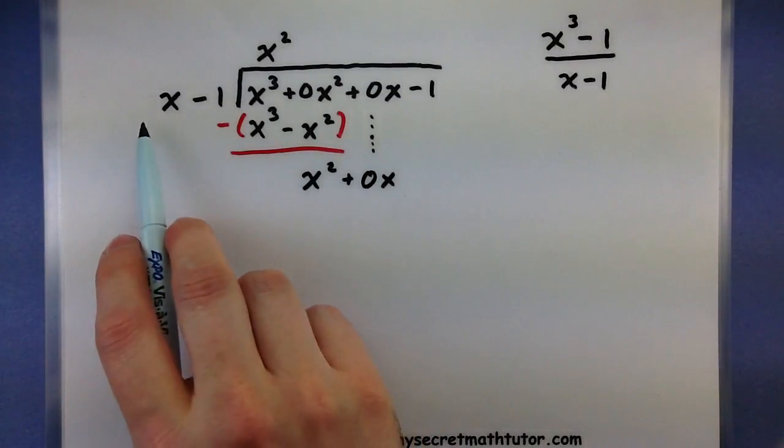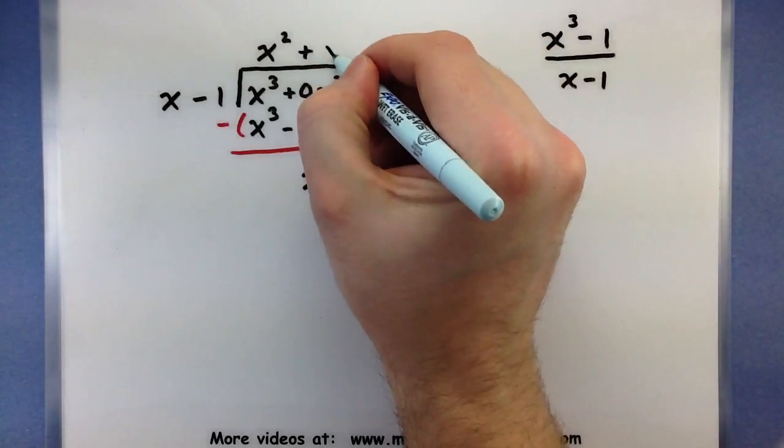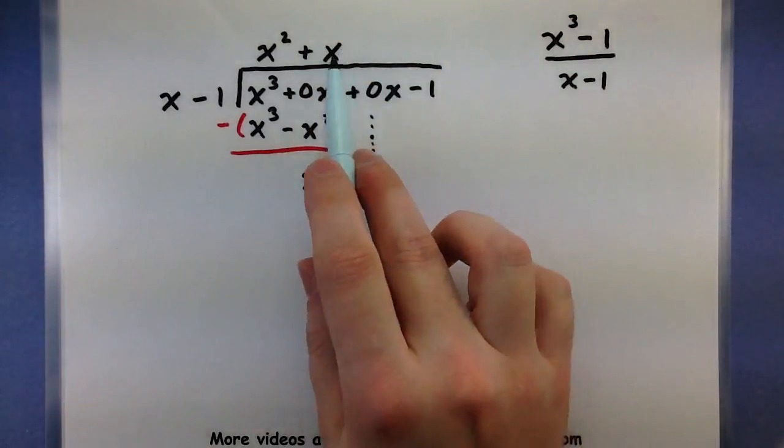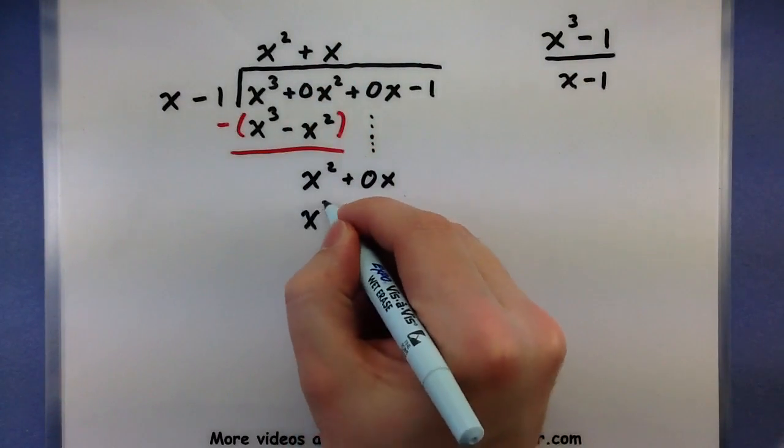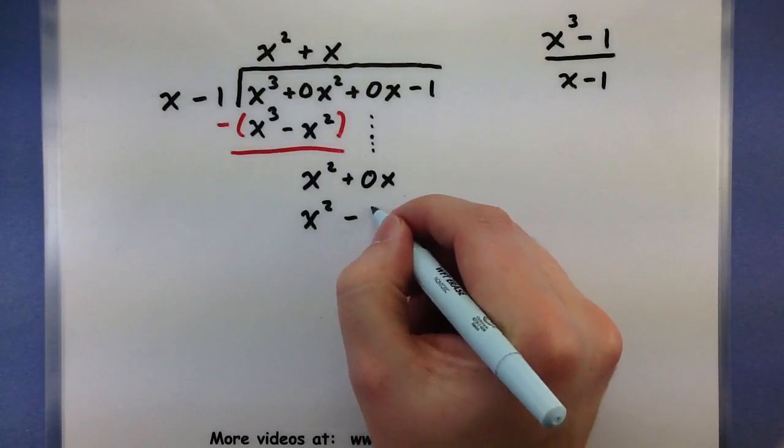x times what would give me an x²? Well, I think x is the thing that will do it, so x times x, x². x times a -1, -1x. And of course we want to subtract that away.